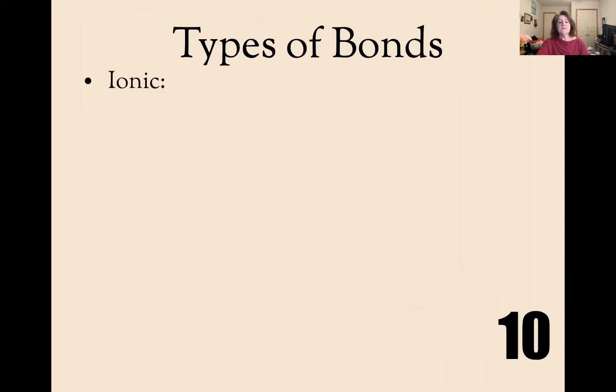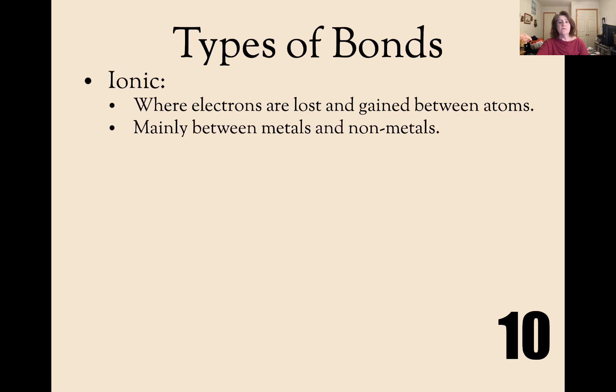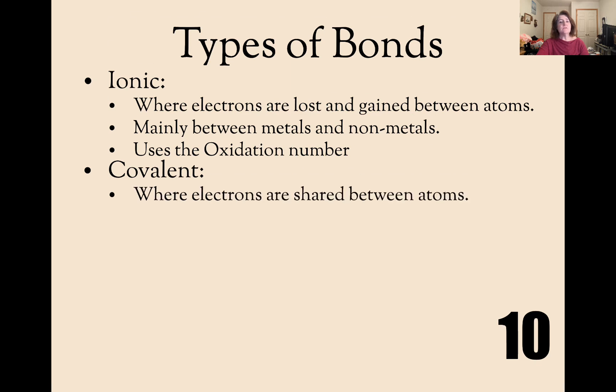Now let's look at the types of bonds. You have two primary types of bonds. Ionic, where the electrons are lost and gained between atoms, occurs between a metal and a non-metal, and will use those oxidation numbers. Then you have covalent bonds. Covalent bonds are where the electrons are shared between the atoms. They occur between two non-metals, and you, in this class, have to be given the number of each element to use.